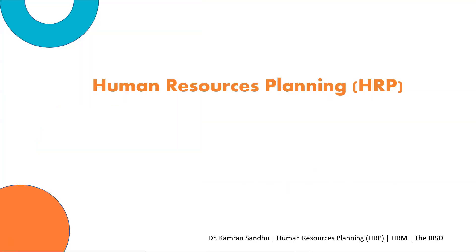What is human resource planning? First, what is planning? Plans are methods to achieve required results. Goals or objectives are specific results you want to achieve. By definition, planning is a process of establishing objectives and courses of action prior to taking action. So you have to focus on courses of action.